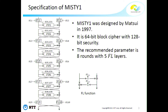This is the specification of Misty-1. It is a 64-bit block length, and the security level is 128 bits. Misty-1 has a Feistel structure with FL function, and the recommended parameter is eight rounds with five FL layers. FL is the FL function, which has this structure. The FO function is the round function of Misty-1. Compared with Feistel ciphers, Misty's round function is a little complicated because the FO function has a recursive structure.